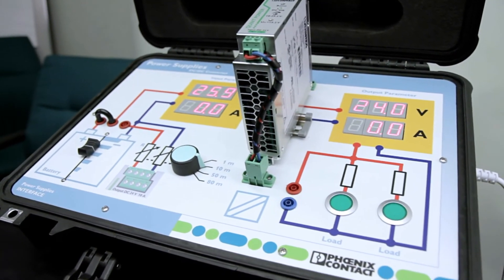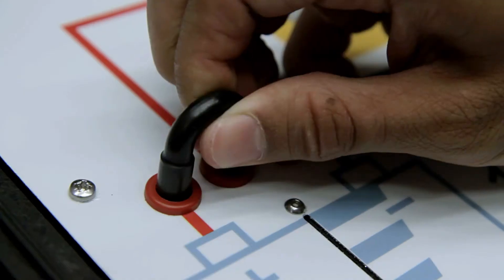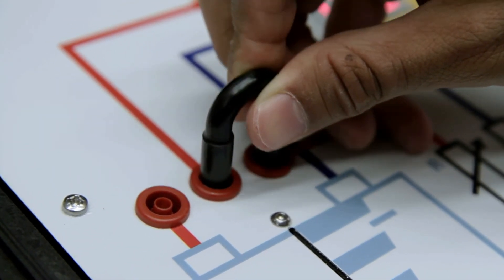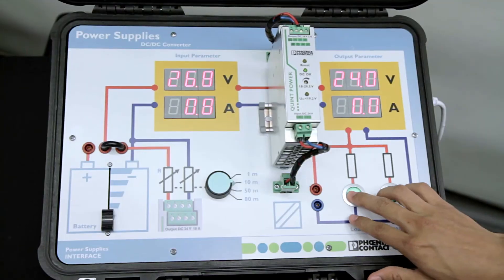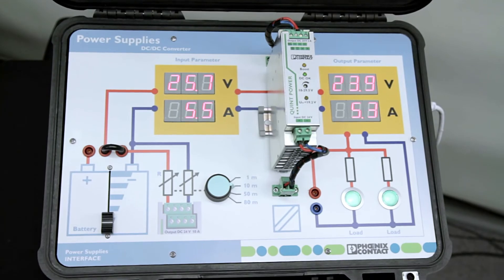In this next lab, we switch from using a battery to using a regular power source. We simulate the situation where you have two loads at the end of your line. Notice the load draws a current of 5.2 amps. Even though our power supply is rated for 5 amps, this is possible through the power boost capability.